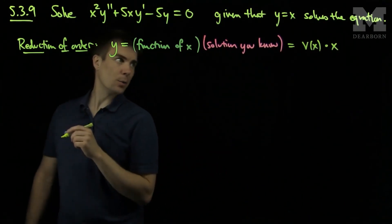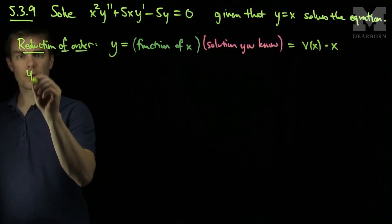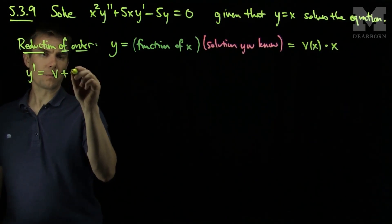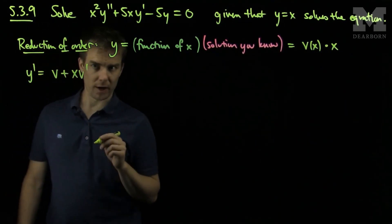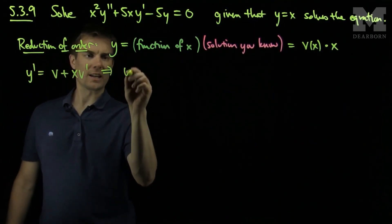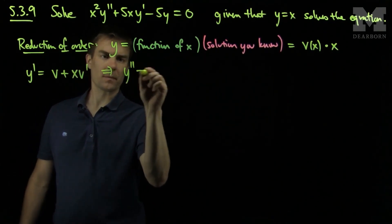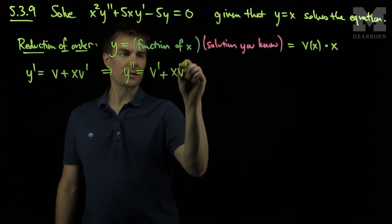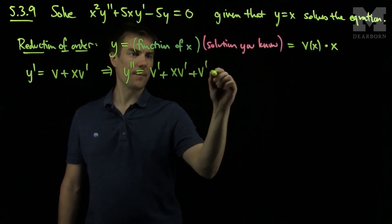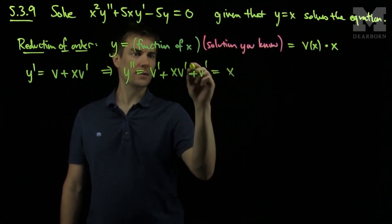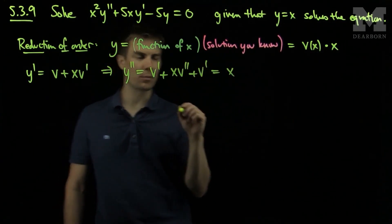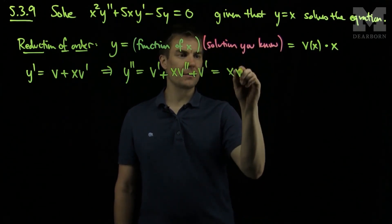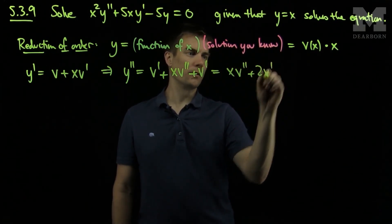So if y is equal to x times v of x, then y prime will be v plus x v prime by the product rule, and y double prime will be x v double prime plus 2 v prime.